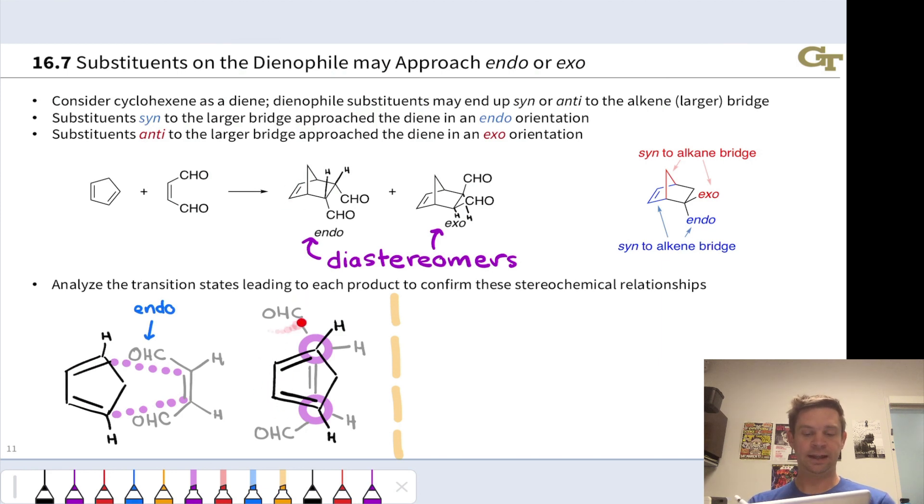These carbons correspond to these carbons, and those end up syn or cis to the CHO groups in the endo product, and that's exactly what we're seeing. This group is syn to the double bond, and this group is syn to the double bond. That happens in the endo transition state.